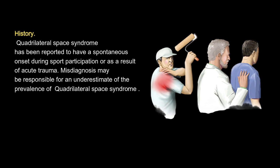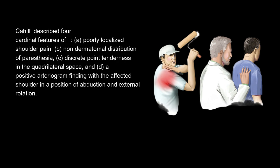Misdiagnosis may be responsible for an underestimate of the prevalence of Quadrilateral Space Syndrome. Cahill described four cardinal features of QSS: A) poorly localized shoulder pain; B) non-dermatomal distribution of paresthesia; C) discrete point tenderness in the quadrilateral space; and D) a positive arteriogram finding with the affected shoulder in a position of abduction and external rotation.